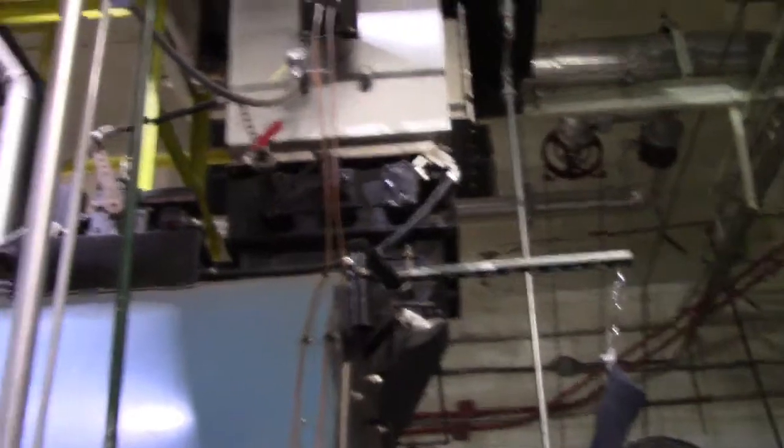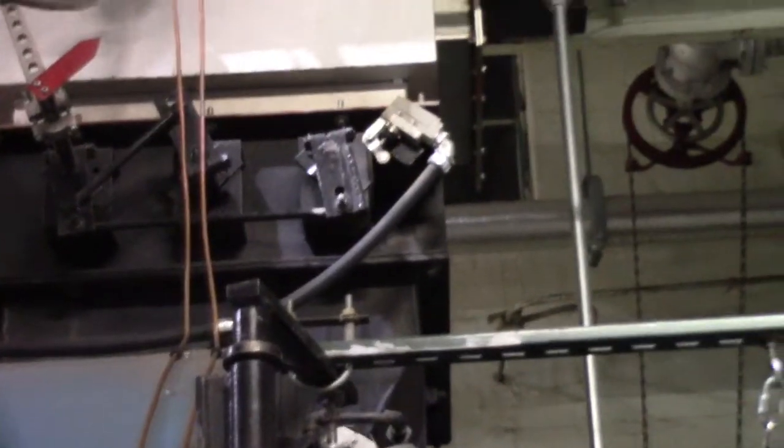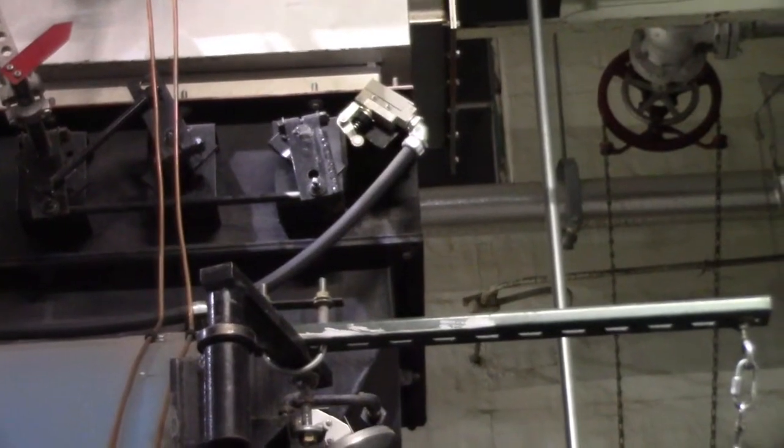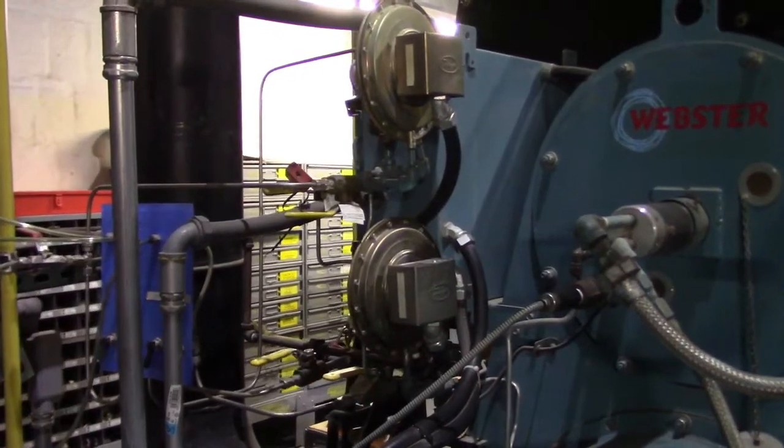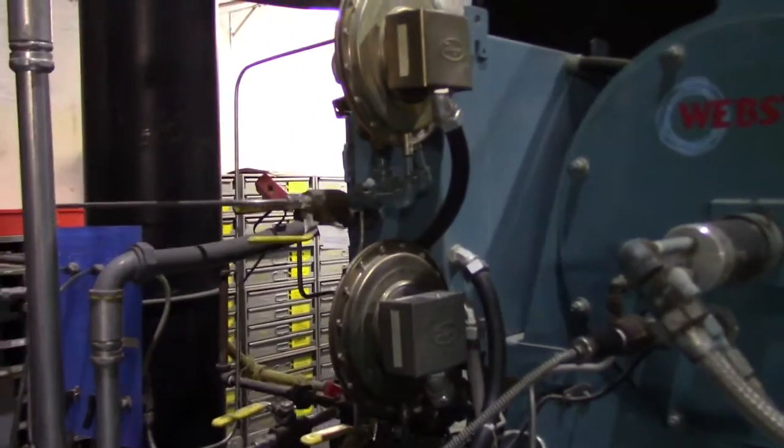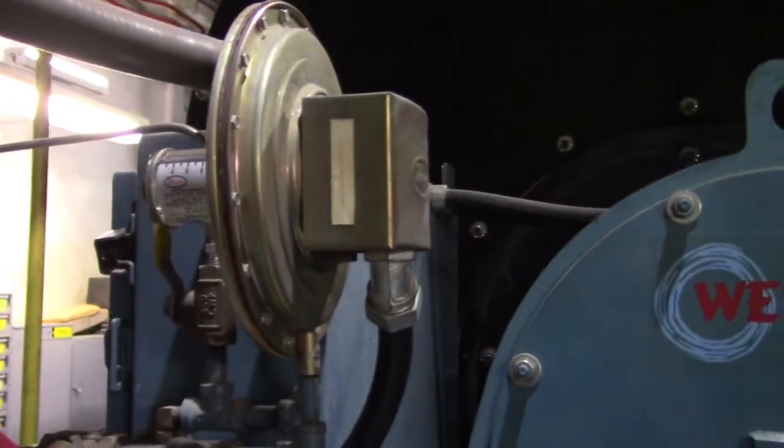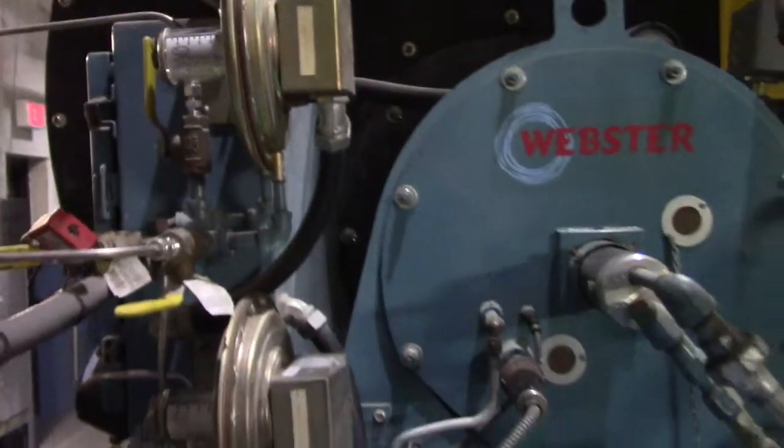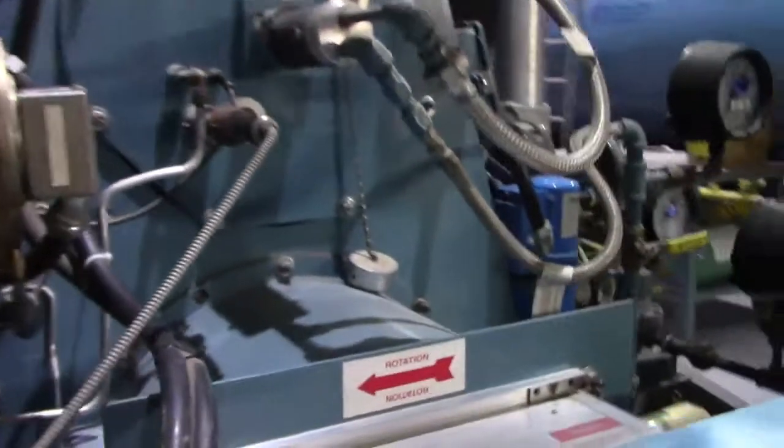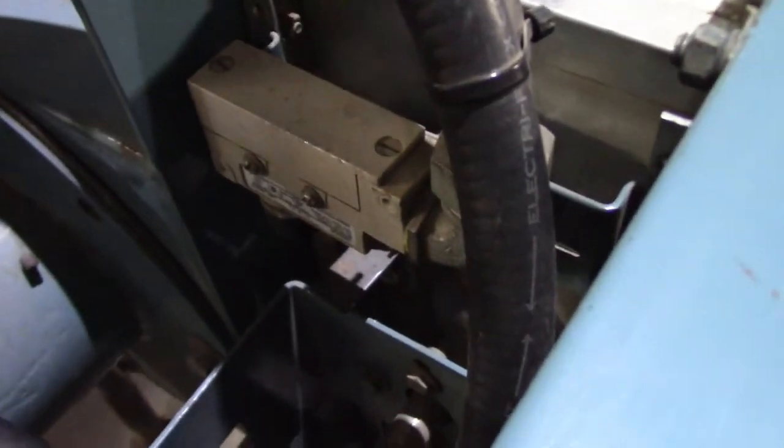One of the three components was the outlet stack damper, this switch. Another component was the purge air proving switch, this switch. And the third component was the inlet damper switch, or high fire switch, which is that switch.